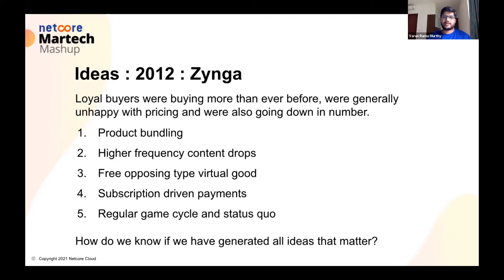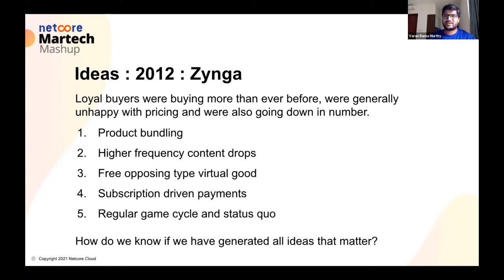The last thing we said was: you know what, it could actually be a regular game cycle. Most games generally have a very sharp rise in user base and then they start coming down — but the slope of the downward trajectory is not as fast as the upward. Generally in most good games, payers are more retained. So one of the things was — let's do nothing, because anyway this is the nature of the game. A quick question for all of you to ponder over later is: how do we know if all ideas have been generated?